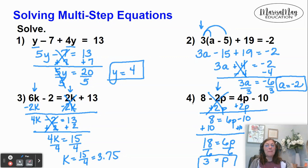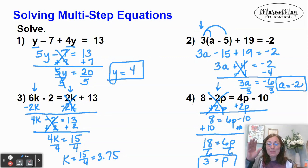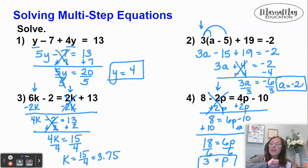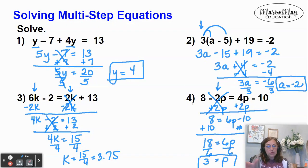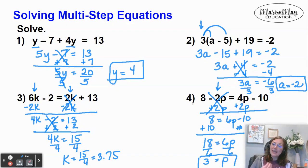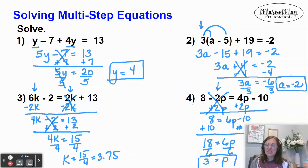Big takeaway here: your simplifying step may look different. First one, we combined like terms. Second one, we distributed. Third and fourth, we moved all the variables to one side. Once we did that simplifying step, we got to a two-step equation and started doing the opposites.